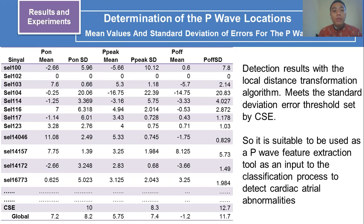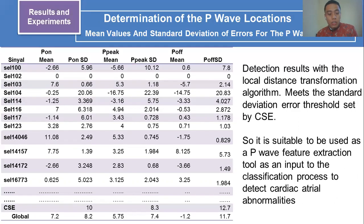Determination of P-wave location: mean value and standard deviation of error from P-wave detection. Our proposed P-wave detection method mean GSE standard deviation of error in P-onset is 8.2, P-peak at 7.4, and P-offset at 11.7. The CSE profile maximum error limits are: P-onset of 10, P-peak 8.3, and P-offset 12.7. Our results are within these acceptable limits.